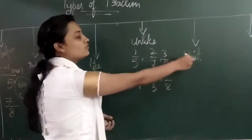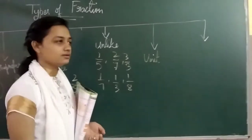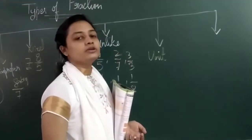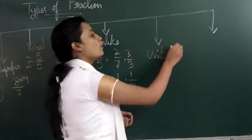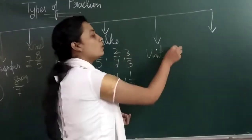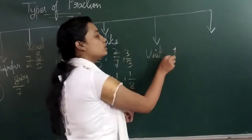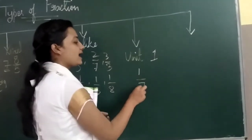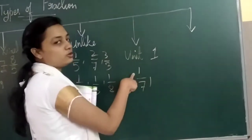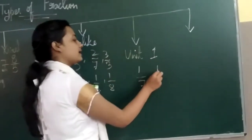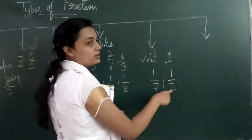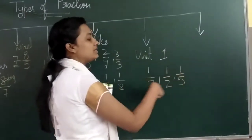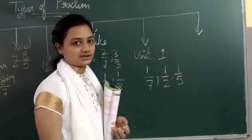Now go for unit fraction. What do you understand by the word unit? Unit means always one — number one. So unit fraction means a fraction having numerator one. Like 1 by 7, 1 by 2, 1 by 5 — all these are unit fractions.